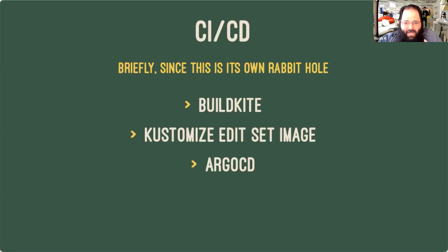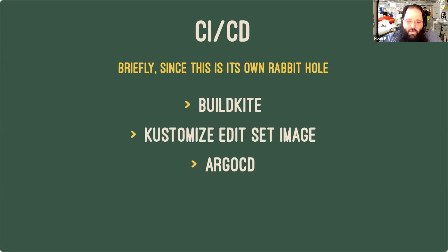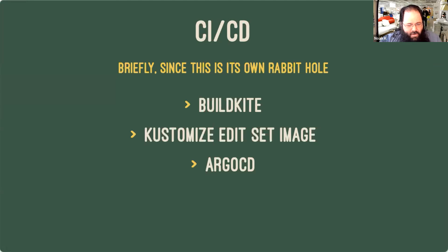We have all of this wrapped in a continuous deployment system via Buildkite. Any commit merged into the main branch for either a solid or a pipeline will be built into a container image, edited into the customized configuration, pushed up into GitHub, and then deployed via Argo CD. There's a little bit more complexity in some of the fancier remote solids because there's an operator — but overall it's a fairly simple, straightforward system. As soon as you merge it, it ends up in the system.